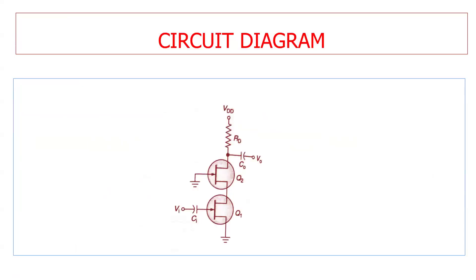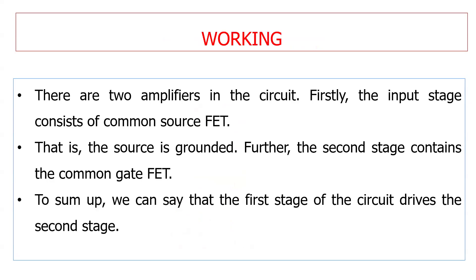The two stages of the cascode amplifier are shown here, and the input is fed to the first stage only. The second stage gate terminal is grounded. The first stage is fed with an input bypass capacitor CI, and on the output side there is a bypass capacitor C0, with the output taken from the drain terminal of the second stage. The first stage is a common source amplifier with the source grounded, and the second stage is a common gate amplifier with the gate grounded.